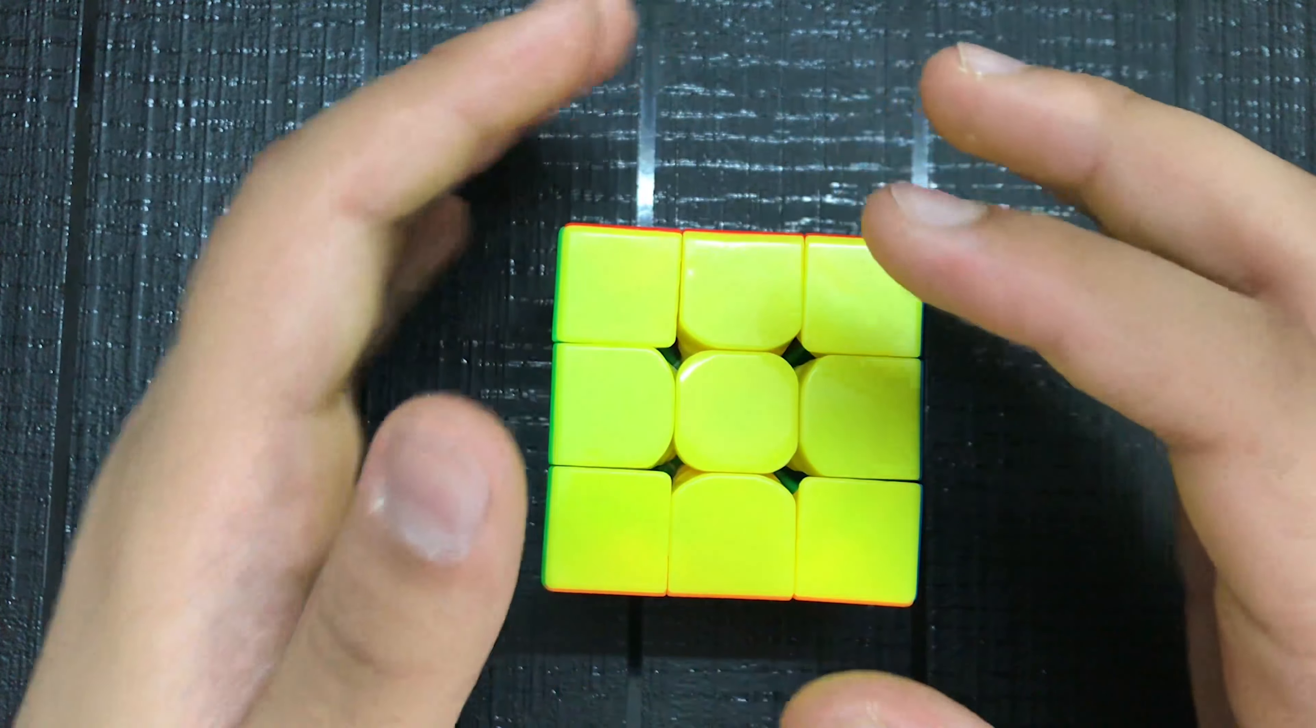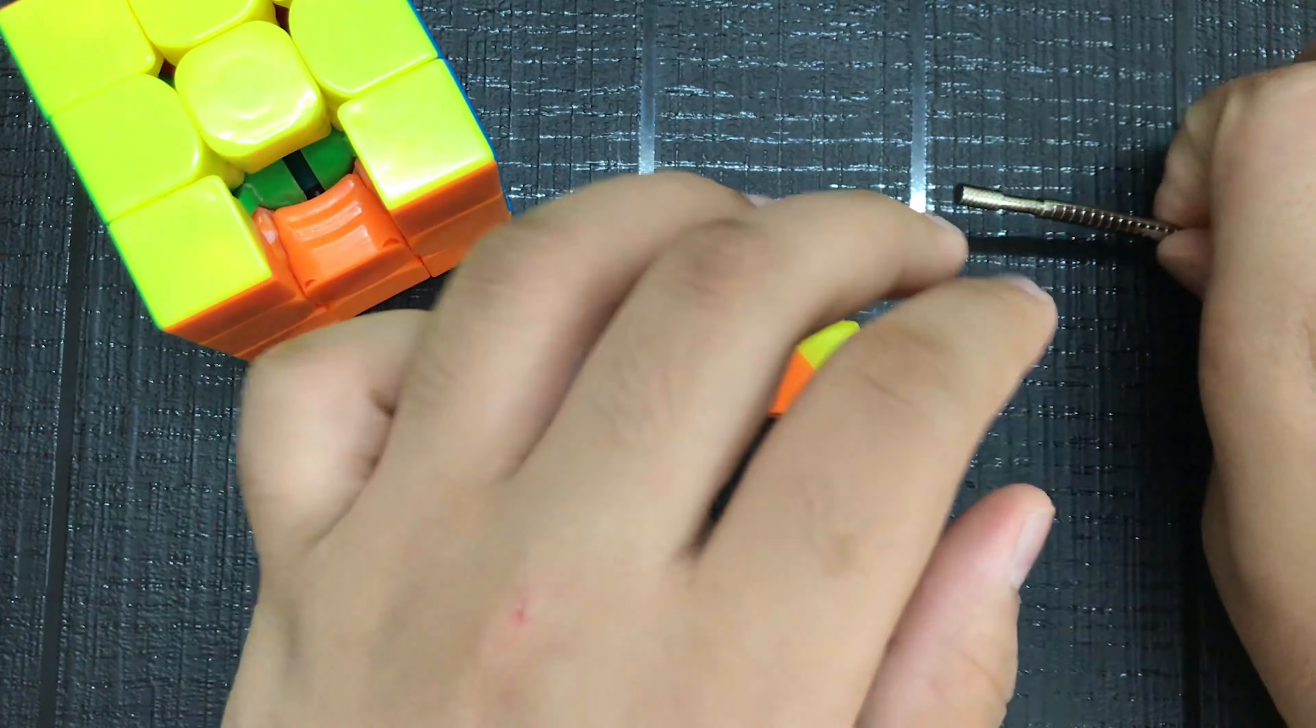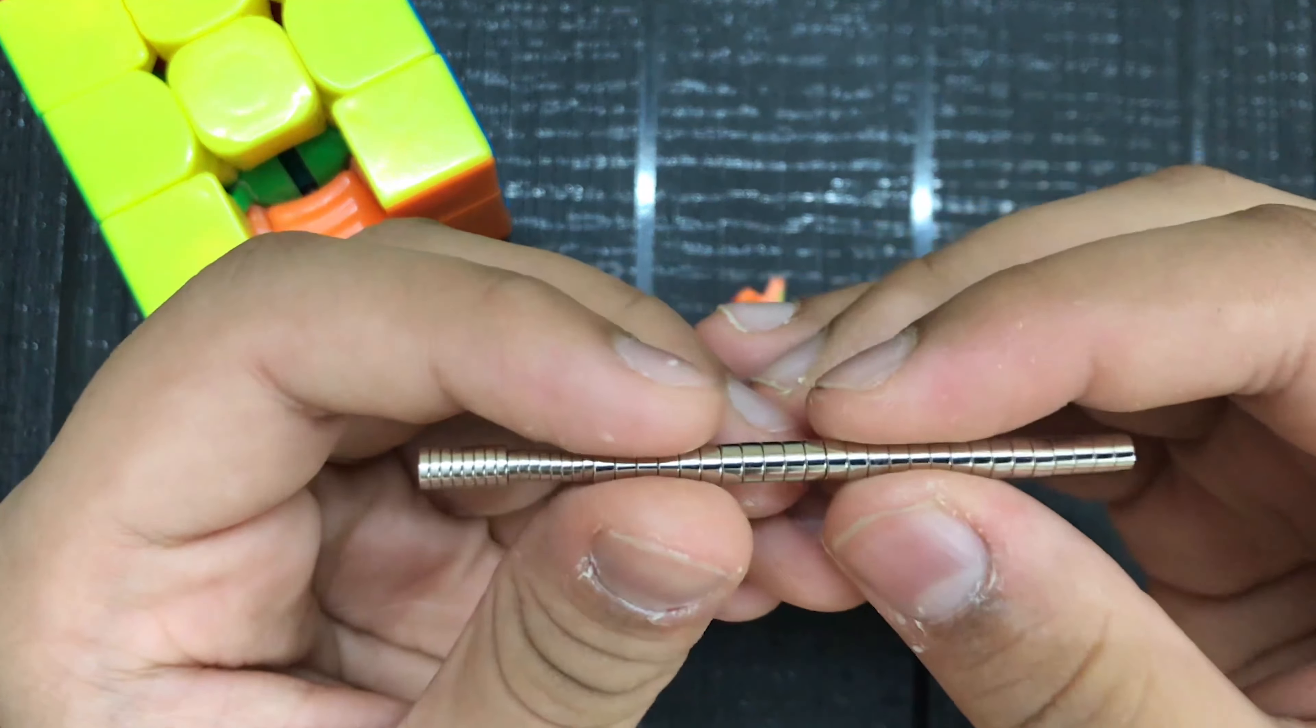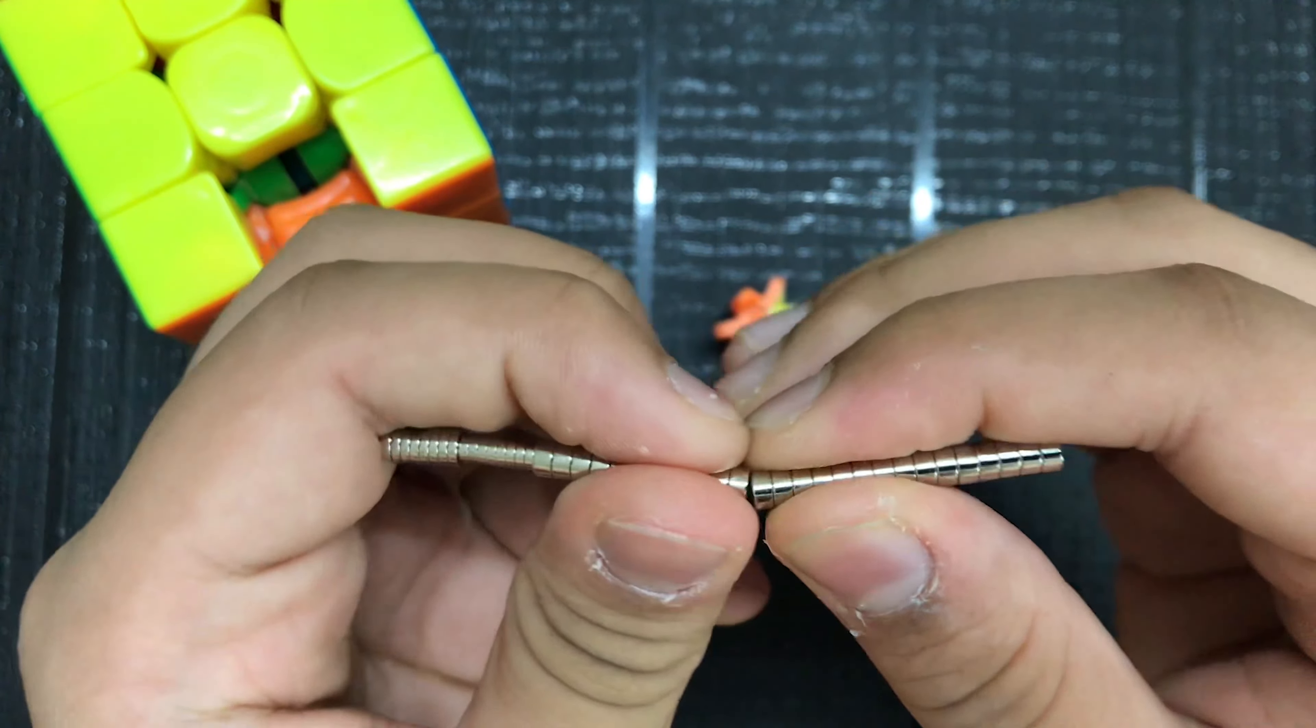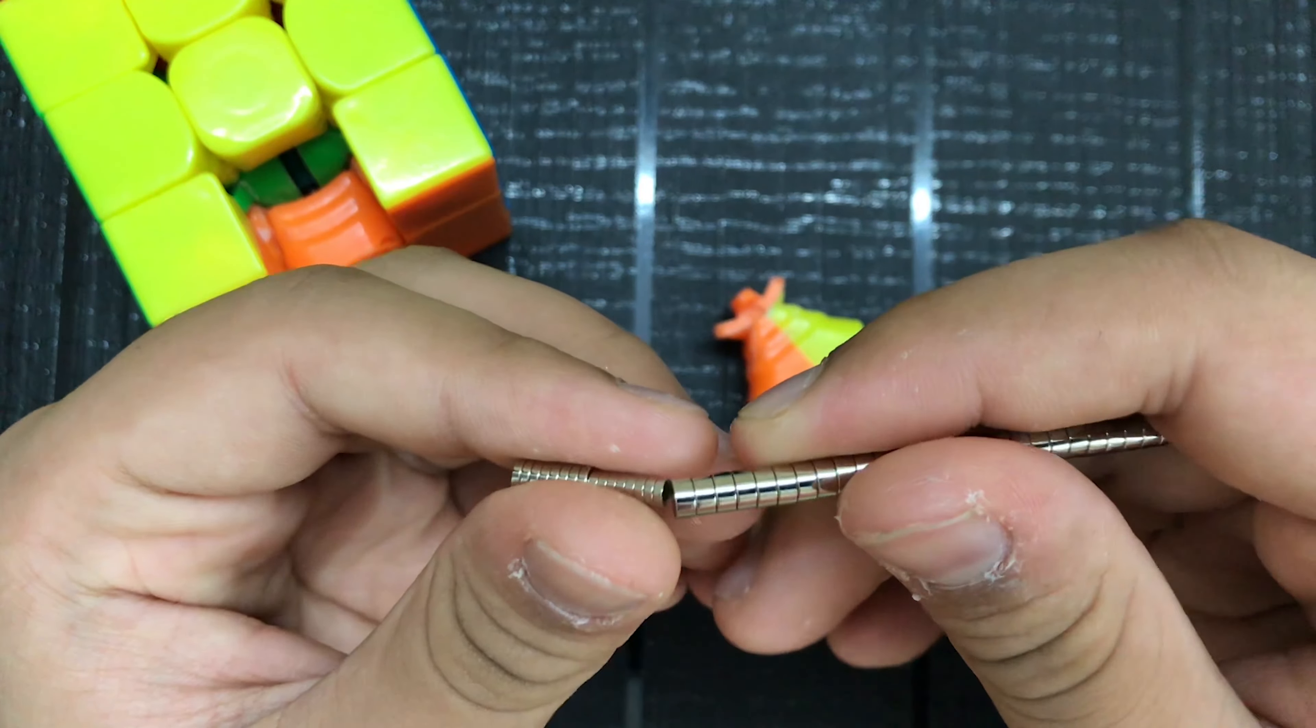So yeah, without wasting much time I think we can jump right into the timelapse. So I have actually three types of magnets over here. These are N45 magnets with, I don't remember the dimensions, but yeah, they're bigger.